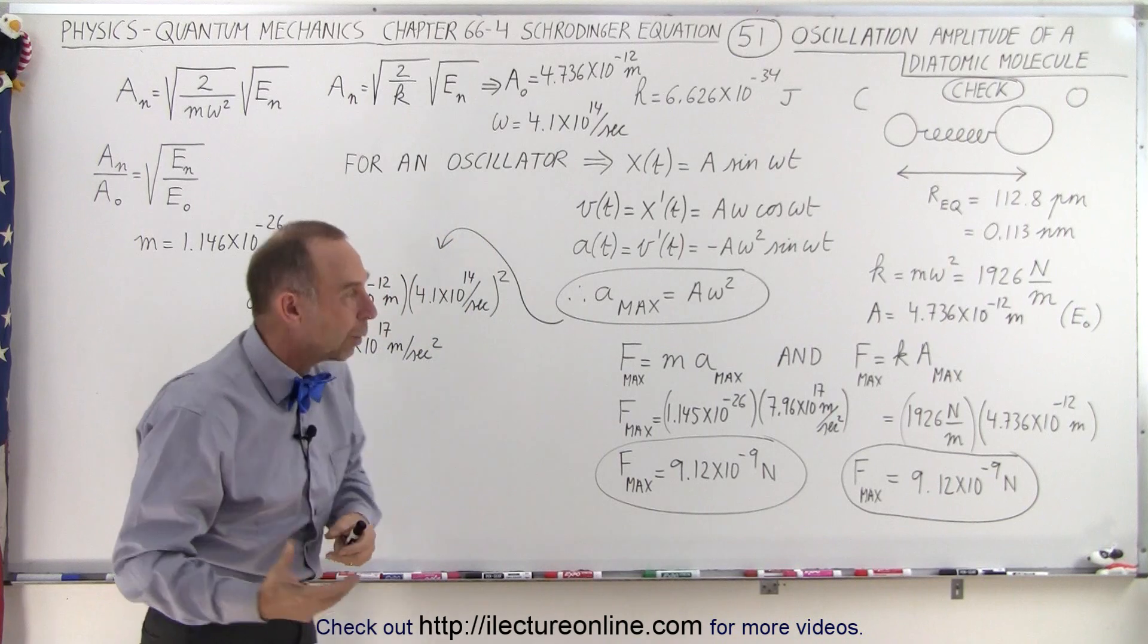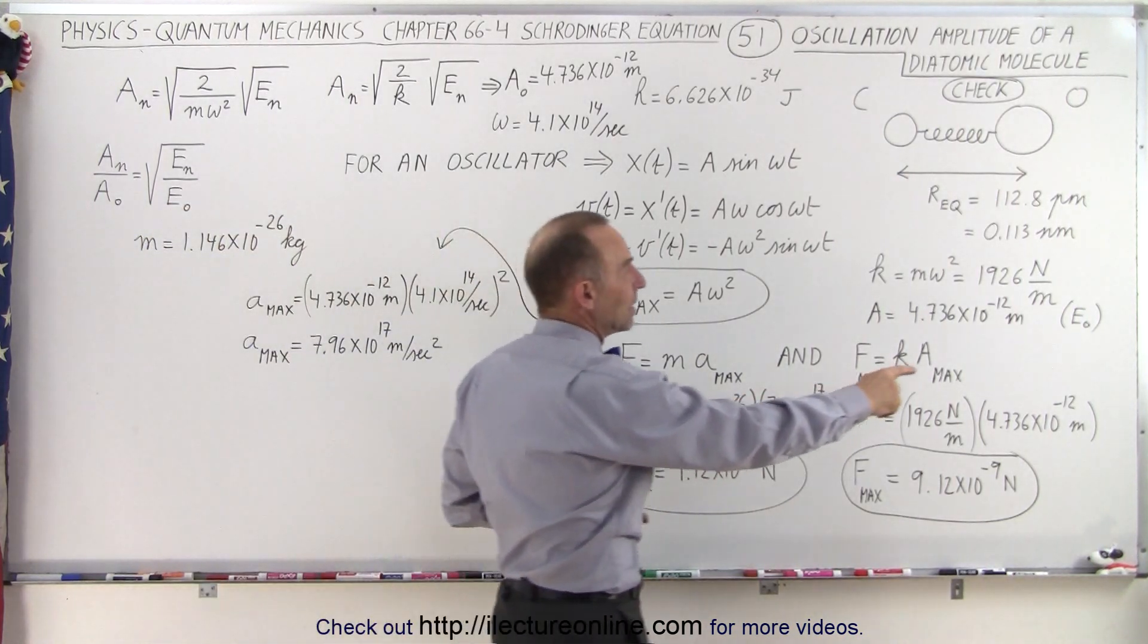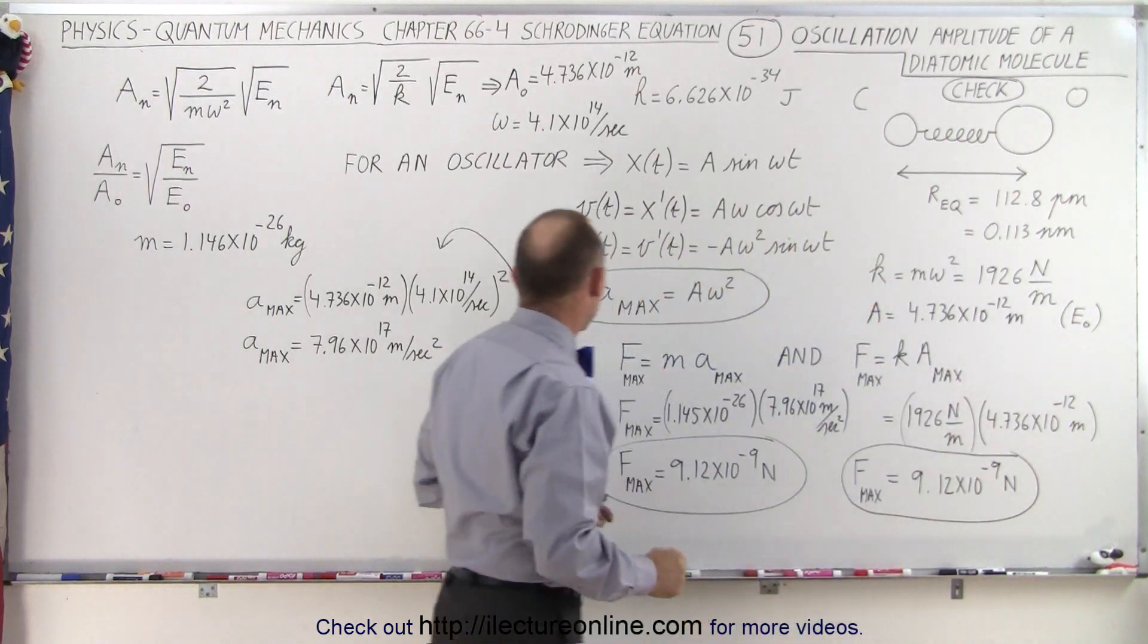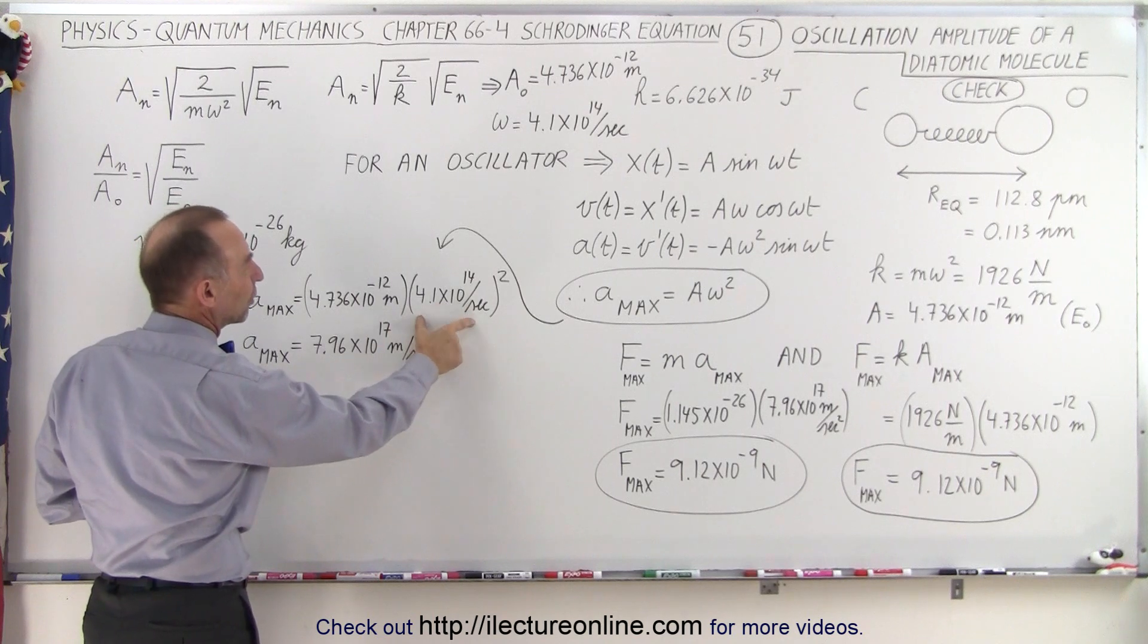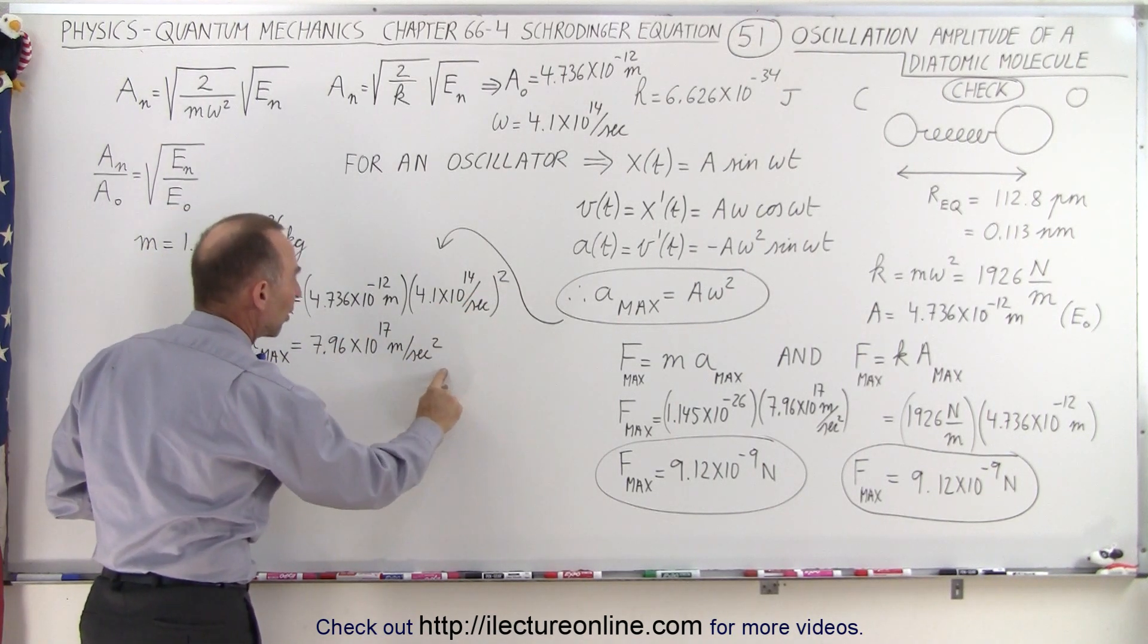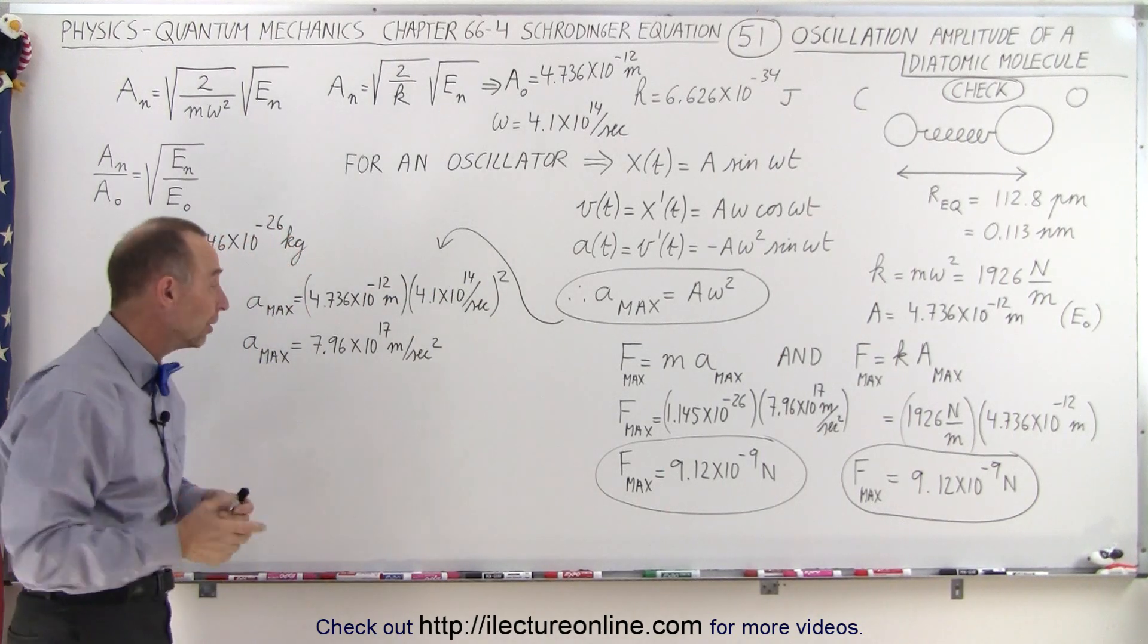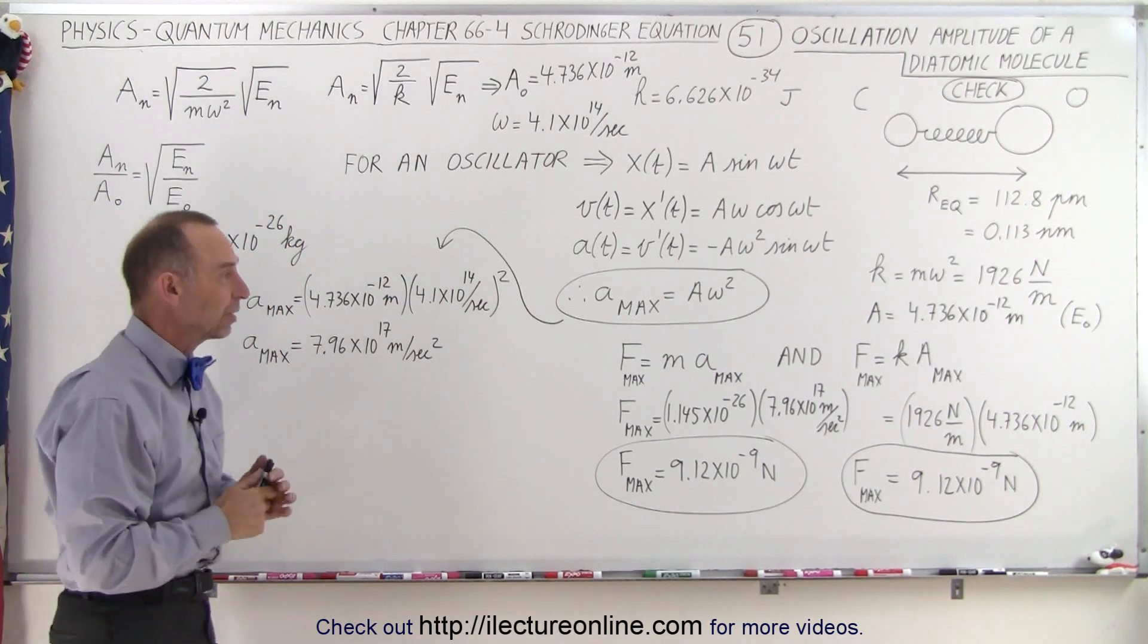If we then plug in what we know, we know the amplitude of the oscillator when we are at the energy zero state, and we know the frequency. So if we square that and multiply times the amplitude, we get the maximum acceleration of the quantum mechanical oscillator of 7.96 times 10 to the 17 meters per second squared.